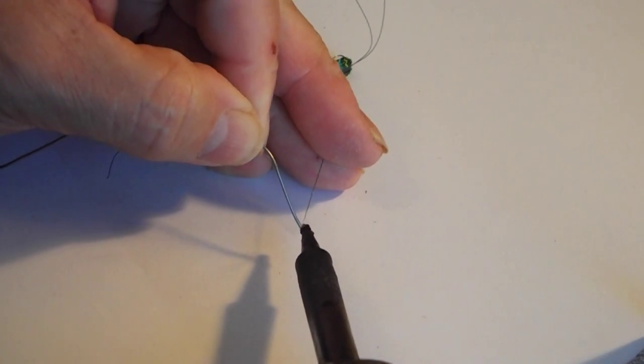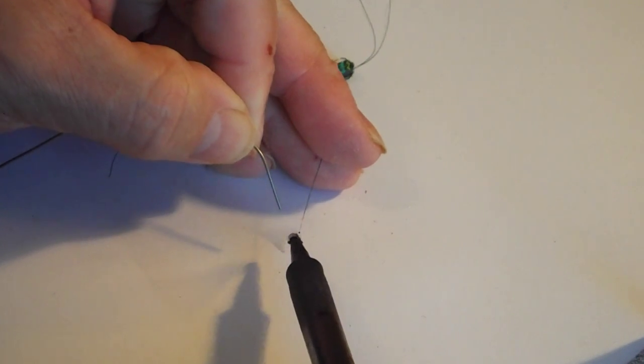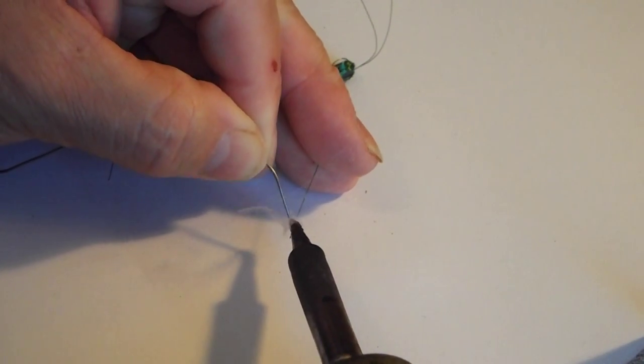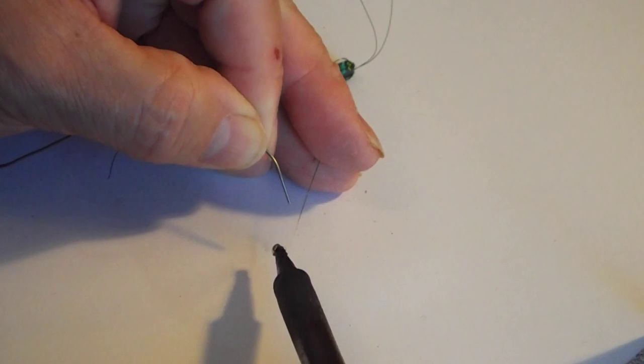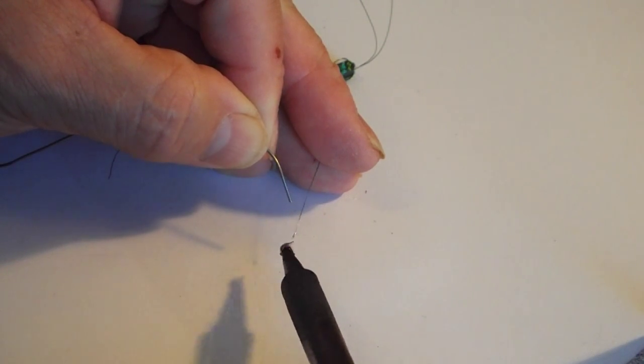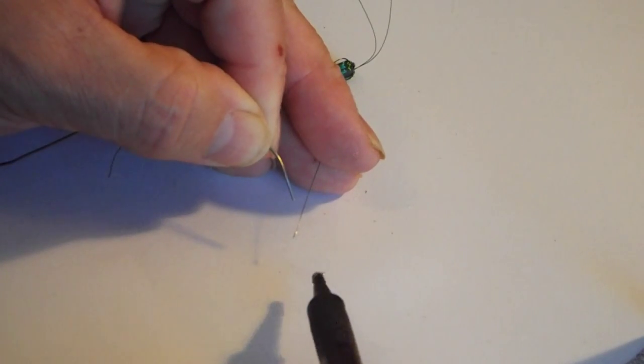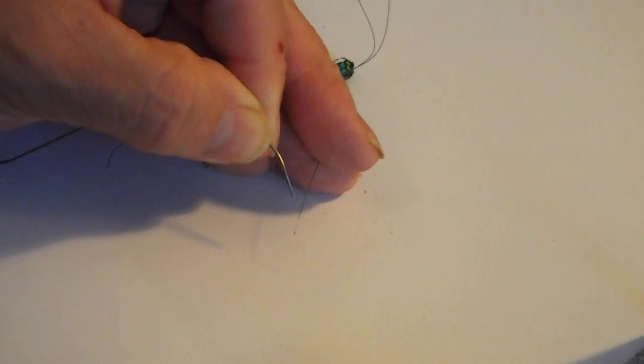Apply the iron to the bare copper wire and the solder and there we have a nicely tinned end.